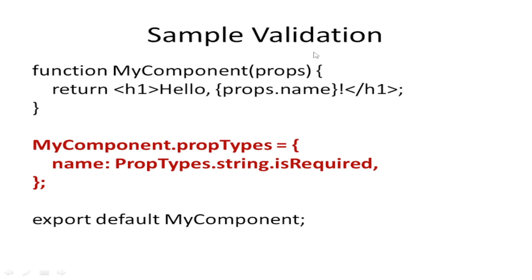Say there is a component getting in a string of type string — it's a name. How will I validate it? I'll write: ComponentName.propTypes = { name: PropTypes.string.isRequired }. So 'isRequired' means the input is mandatory. If you are calling this component, this string type input is required. If they send in a number, it will not throw an error — it will generate a warning.